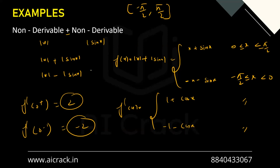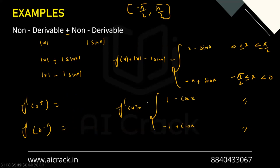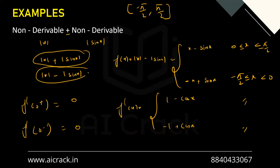Second example: F(x) = |x| - |sin x|. Now we get F'(0⁺) = 1 - 1 = 0 and F'(0⁻) = -1 + 1 = 0. Both are equal, so this function is differentiable. So the same two non-differentiable functions, when subtracted instead of added, become differentiable.